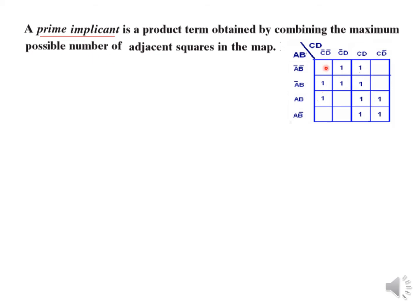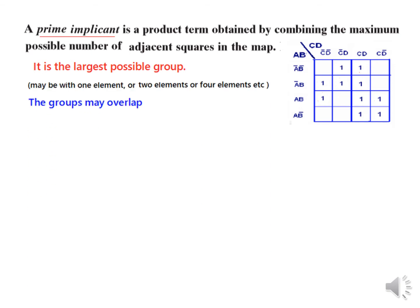Can we guess what is the maximum possible number we can combine? We do not have any combination for eight terms, but we can see there are a couple of four-term groups. We can combine these four terms, and these four terms, and then these two terms. So these are all prime implicants — the largest possible group, whether one element, two elements, or four elements. We cannot neglect those not covered by larger groups.